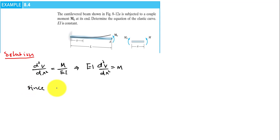Since M equals M naught, we have EI d²v/dx² equals M naught.